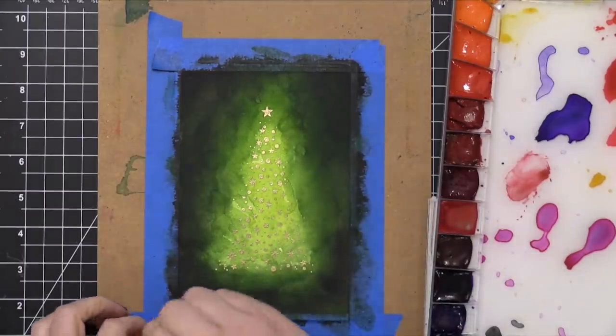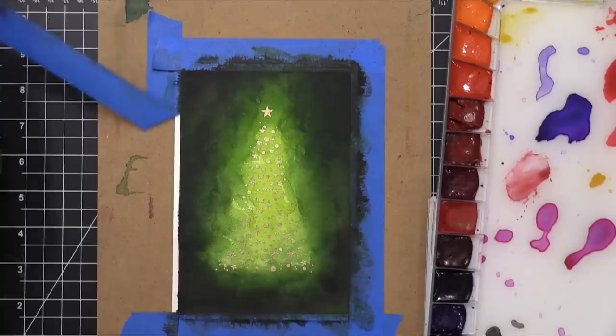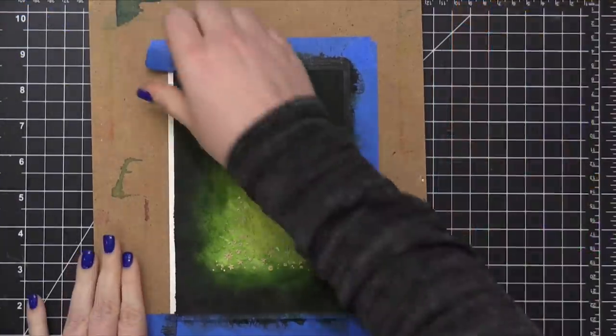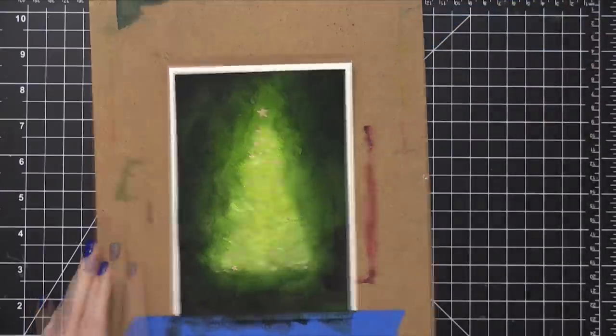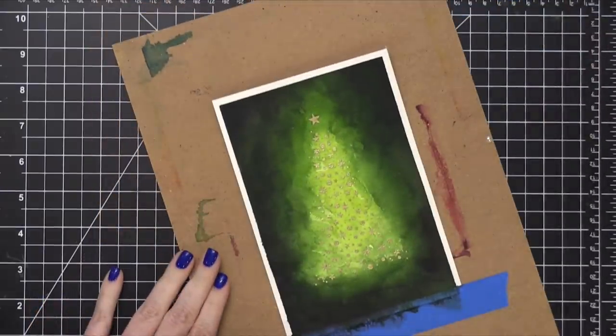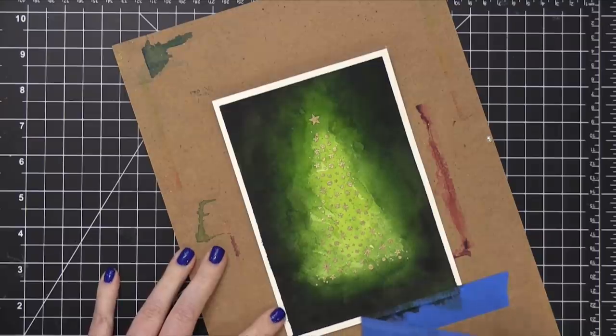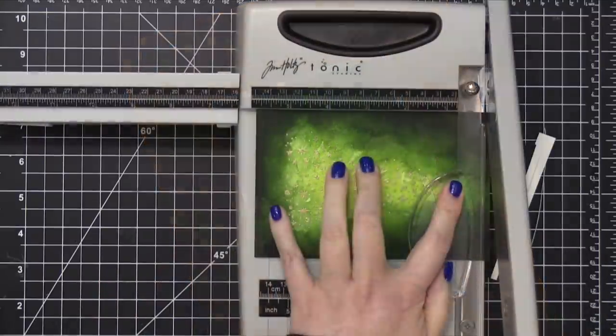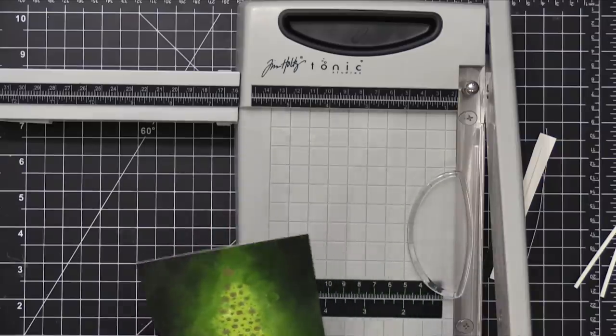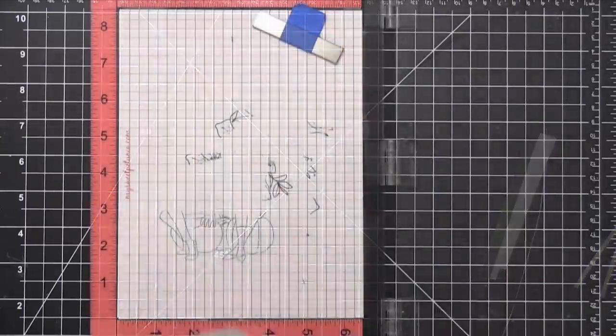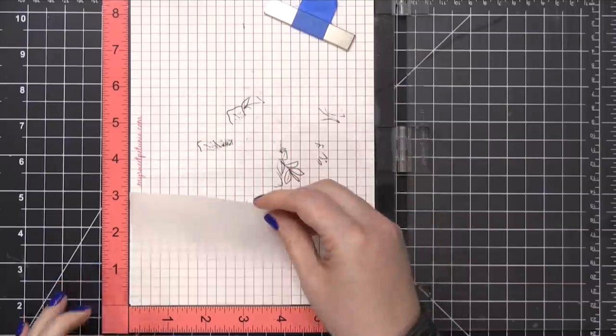After all my watercoloring was done and dry I peeled off the blue painter's tape. This is one of my most favorite parts of watercoloring like this because it's such a nice clean line. Then I'm going to trim down this piece here because I want it to be a little bit smaller than a five by seven card front. So I'm just trimming it down and then I'm going to work on the sentiment that's going to go on the card.